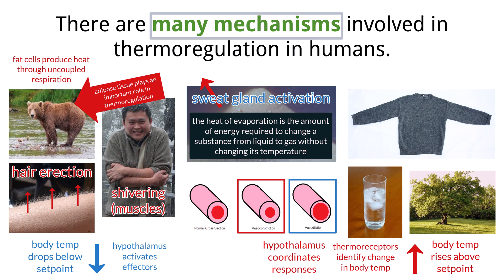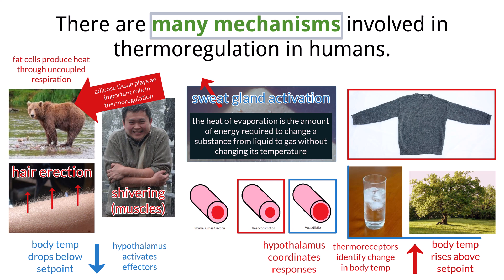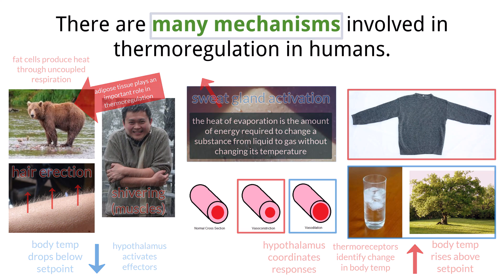It's also important to remember that you can make conscious choices to respond to changes in your body temperature. For example, if you are feeling cold, you might choose to put on a sweater or an extra layer of clothing. If you are feeling hot, you might seek shade, remove layers of clothing, or drink cold fluids. Regardless of the response, once the core body temperature returns to the set point, the responses will be reduced and the negative feedback loop is complete.